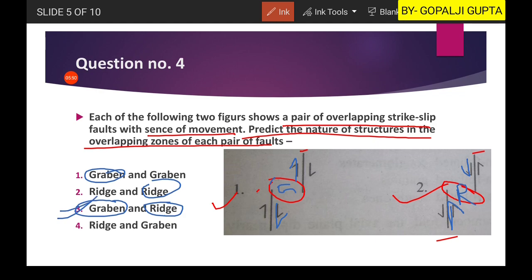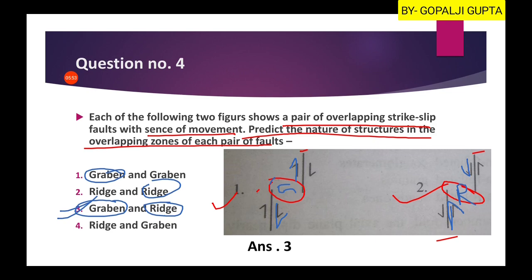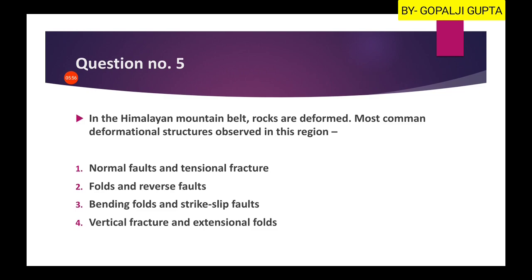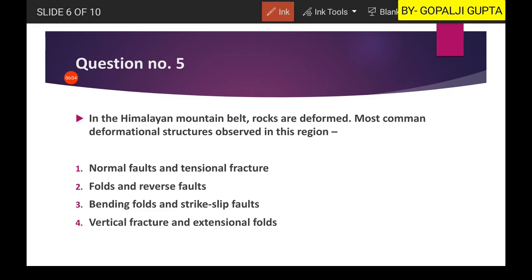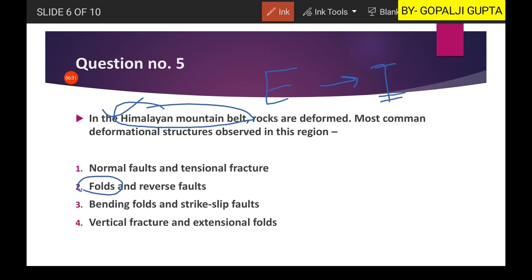Question five: in the Himalayan mountain belt, rocks are deformed — what is the most common deformational structure observed in this region? As you know, the Himalayas are the product of the collision of the Eurasian and Indian plates. When these plates collide, the forces are compressive in nature, and compressive forces generate folds and reverse faults. Hence the second option is our right answer.